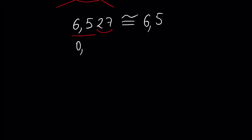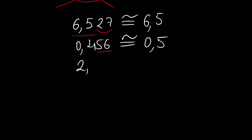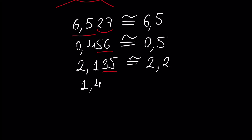If we had 0.456, this is equal to 0.5 because 56 is bigger than 50. If we had 2.195, this is equal to 2.2 because 95 is bigger than 50. If we had 1.45, this is equal to 1.4, because here we had exactly 50, and 50 is not bigger than 50. By our convention, we write this is equal to 1.4.